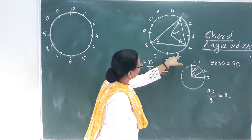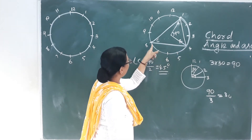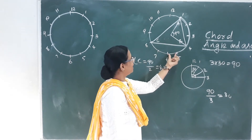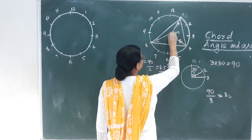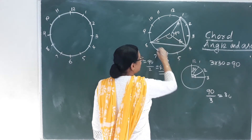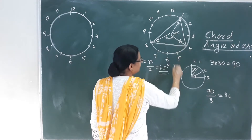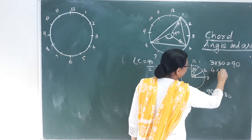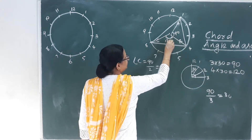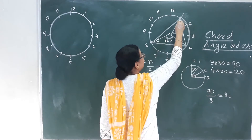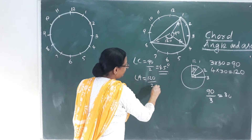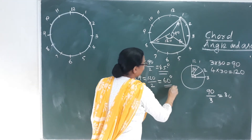Looking at the arc from 4 to 8, that is 4 consecutive distances. The central angle is 4 into 30, which equals 120 degrees. So inscribed angle A is equal to 120 divided by 2, which equals 60 degrees.